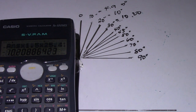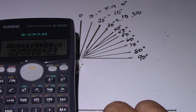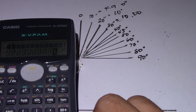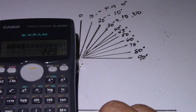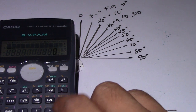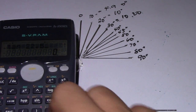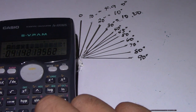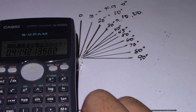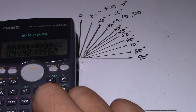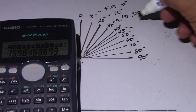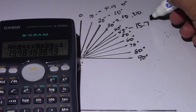Let's try 45 degrees. Half of 45 is 22.5. Tangent of 22.5, multiply by 1.5, multiply by 25.4. Our answer for 45 degrees is 15.78.